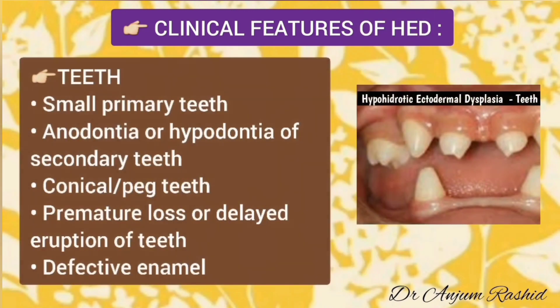Teeth abnormalities include small primary teeth, anodontia or hypodontia of the secondary teeth, conical or peg-shaped teeth, premature loss or delayed eruption of teeth, and defective enamel.